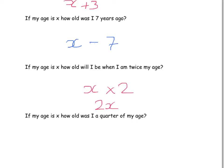If my age is x, how old was I a quarter of my age? A quarter of my age means my age was a quarter of the size it is now, so it's 4 times smaller. When we quarter something, it means we divide by 4. So we've got my current age x, and we're dividing it by 4.